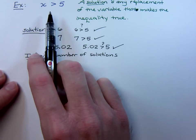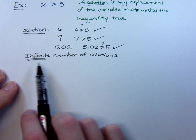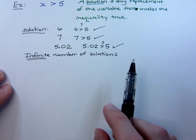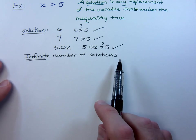Going back to this example, x is greater than 5. We already said there's an infinite number of solutions. There's no way that we can list them, so here's one way that we can go about expressing our solution set.